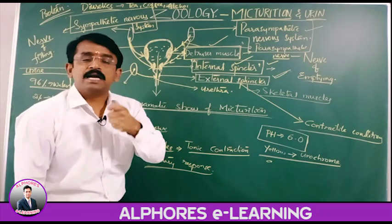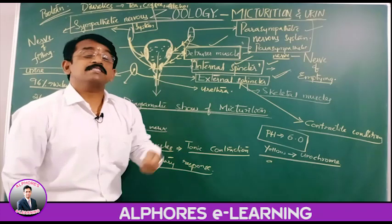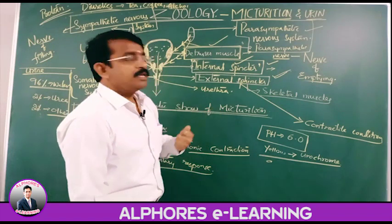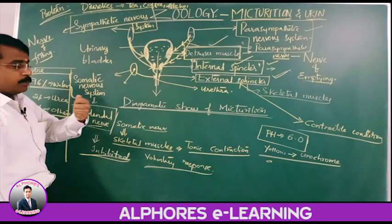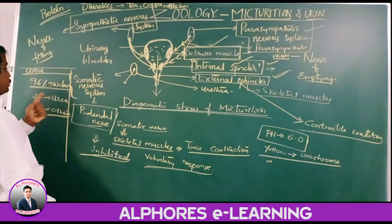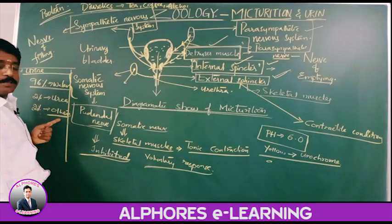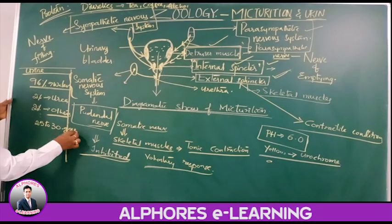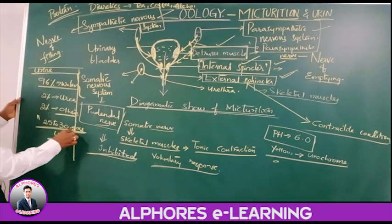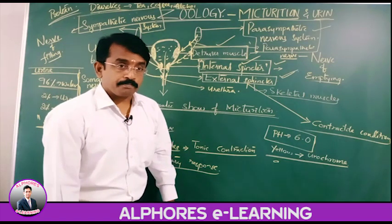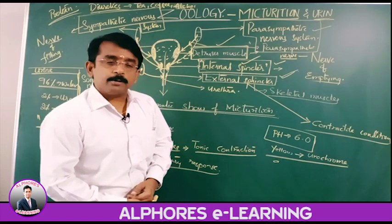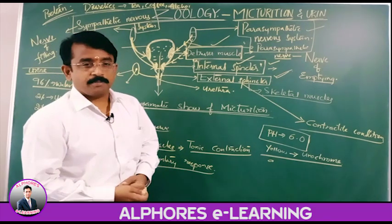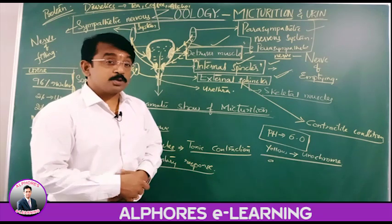Due to the defect in ADH, we discussed diabetes insipidus, where 20 liters of urination takes place per day. The urine composition has a pH value of 6 and urochrome which gives the yellow color, with 96% water, 2% urea, and 2% other substances. Per day, 25 to 30 grams of urea is sent out.